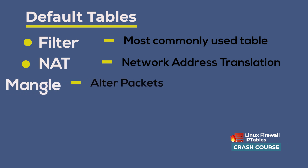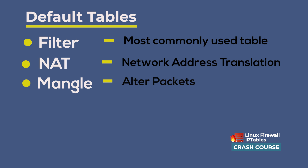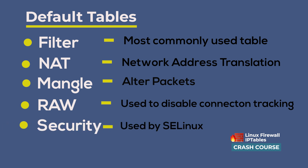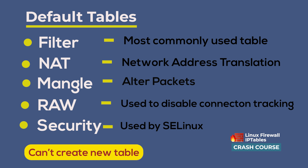The mangle table is used to alter packets. You can do things like modify the TTL, which stands for time to live. The raw table is rarely used and its primary purpose is to allow exemption from connection tracking. The security table is used for mandatory access control network rules, implemented by Linux security modules. These are the tables you will be working with and each one has a specific purpose. One thing to point out here is that you cannot create your own tables.